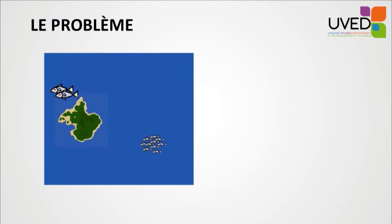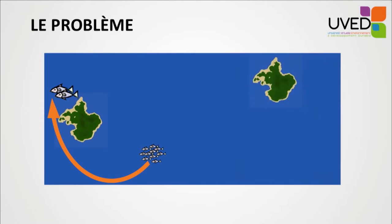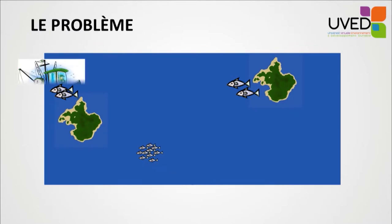The larvae will drift in the current, and some of them will come back to the original island to settle down, reproduce, and maintain the same level of population. But sometimes the larvae will not go back to the original island — they will migrate and find a different island where they can settle down. Protecting one area around one island doesn't necessarily mean we protect the whole fish population.